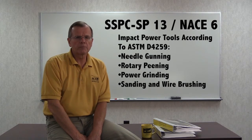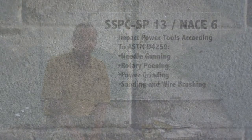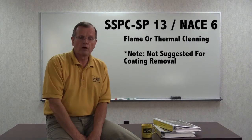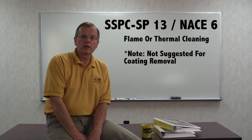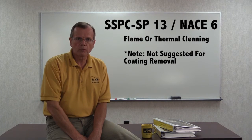While coatings can be completely removed by grinding or sanding, these methods are more commonly used for the removal of loose coating and for feathering edges. Acid etching, according to ASTM D4259, is used on horizontal surfaces to etch bare concrete, but it will not remove existing coating. Also addressed is flame or thermal cleaning, which is used to extract organic contaminants from concrete, but is not suggested for coating removal.